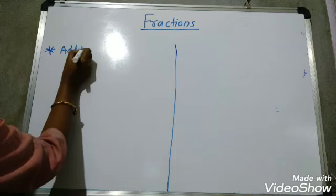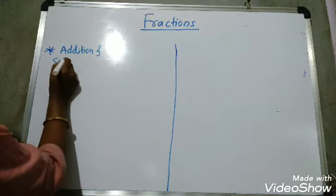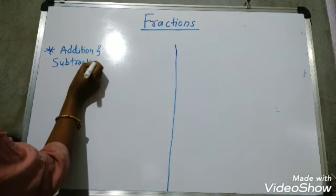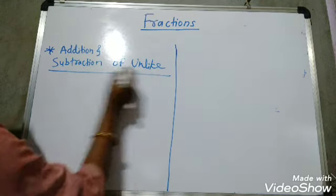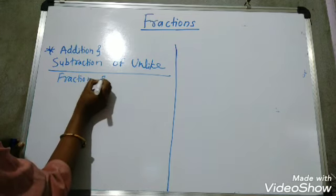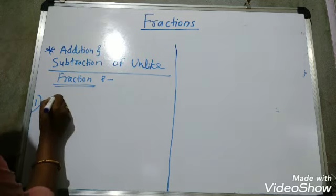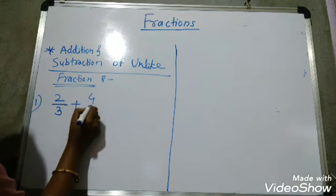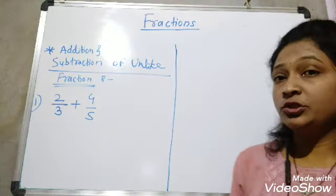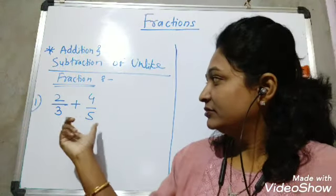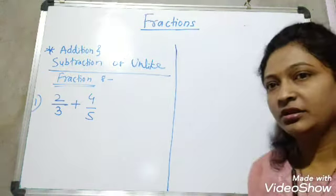Addition and subtraction of unlike fractions. For example: 2 upon 3 plus 4 upon 5. For small numbers, there are two methods: cross multiplication, and finding the LCM to make the denominators the same. If you don't know how to find LCM, I have already uploaded a video — please watch that.